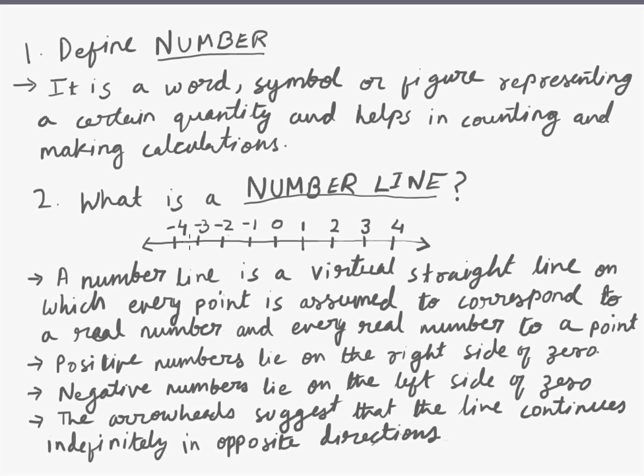A number line is a virtual straight line on which every point is assumed to correspond to a real number. So only real numbers can be represented on a number line.